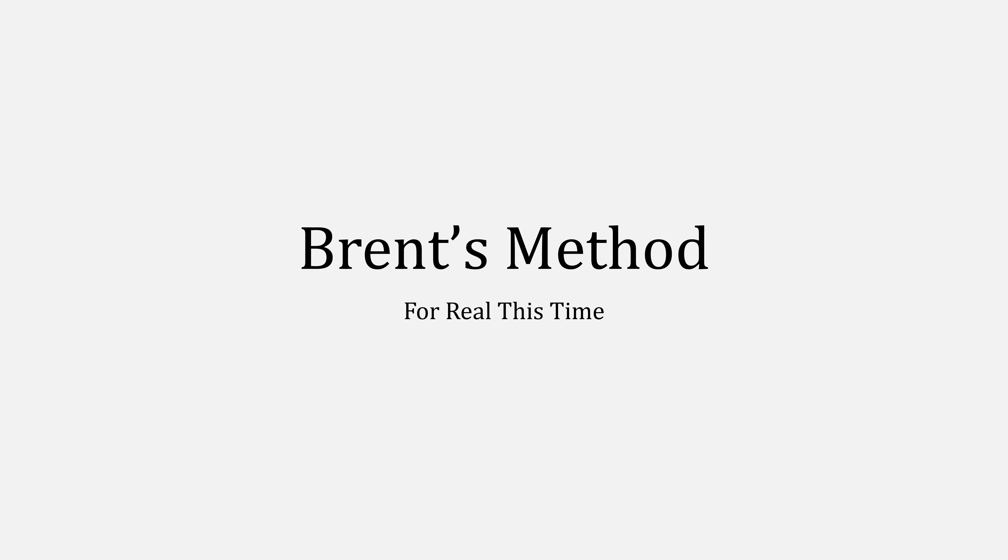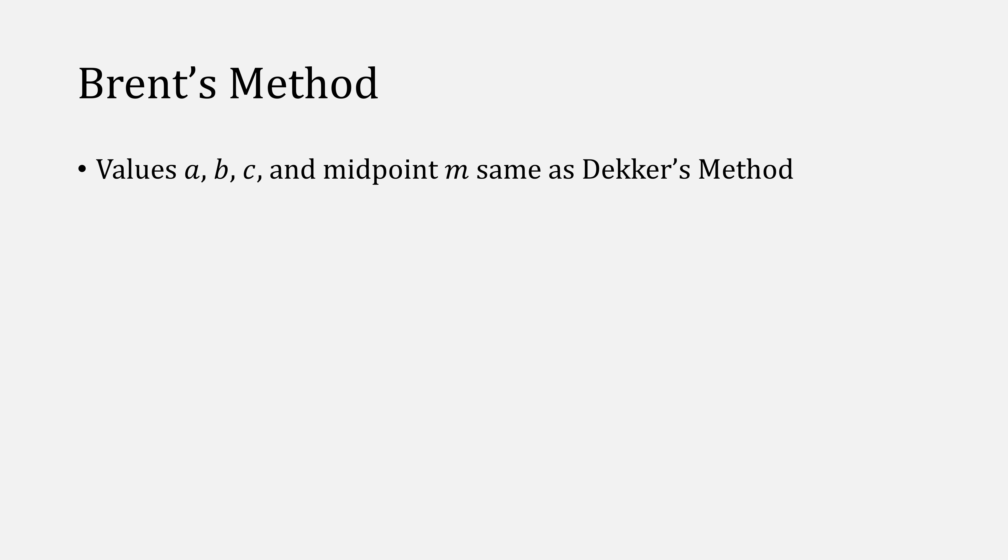Let's talk about Brent's method for real now. Brent's method uses the same A, B, C, and midpoints that Dekker uses. It tries to compute a different S though, first using IQI with the points A, B, and C. This will fail in the first iteration because we only have two points when we start, A and B. Remember that C is initially A. So when it fails, it tries to compute the secant intercept using B and C. And if that also fails, then it falls back on bisection.